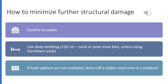Because horses that develop laminitis are likely to develop it again, we need to minimize further structural damage to the hoof. Confine the animal to a stable or enclosed field shelter until healed. Use deep bedding of more than 20 centimeters — sand or peat moss — unless the horse has styrofoam pads on their hooves. If a proper stable is unavailable, fence off a stable-sized area in the paddock and ensure there is no access to lush green grass.